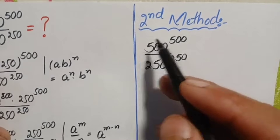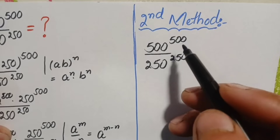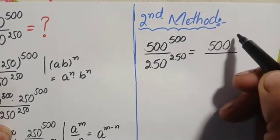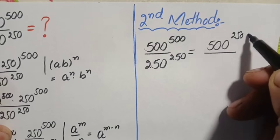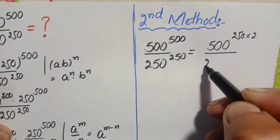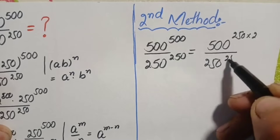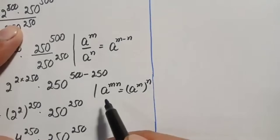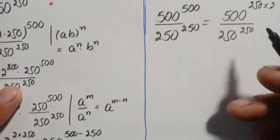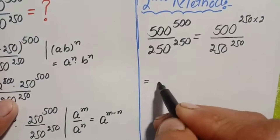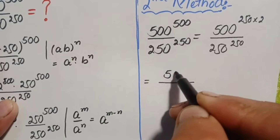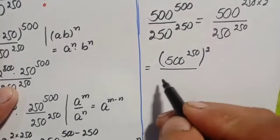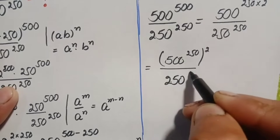We will try to solve this problem using the second method. In the second method, we will factorize 500. So therefore we can write 500 raised to power 500 as 500 raised to power 250 times 2, which is 500, and this number will be the same: 250 raised to the power 250. In this numerator we will use an exponential identity to change the power form, so this numerator will become 500 raised to the power 250, whole squared.